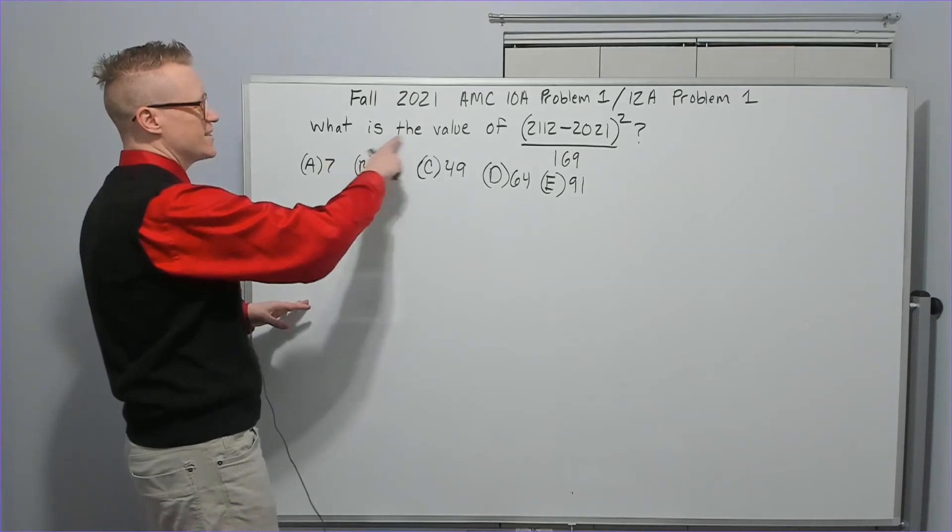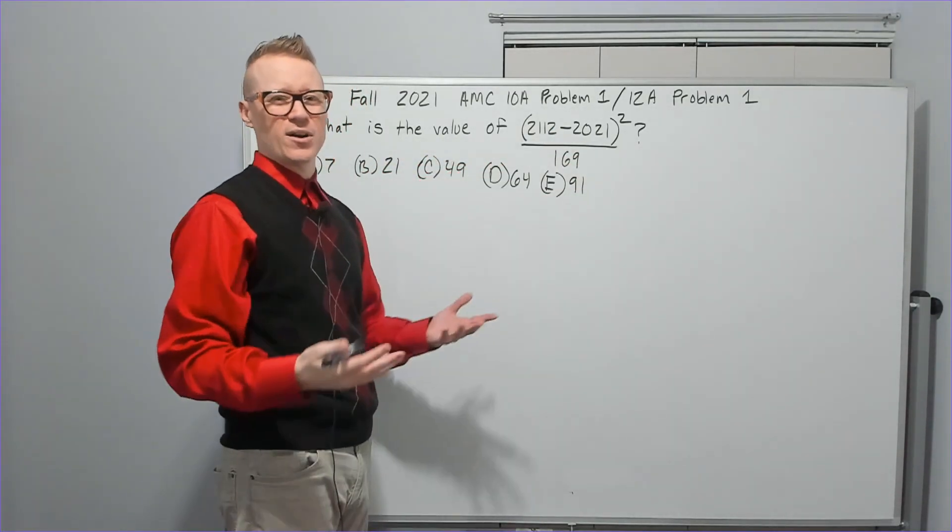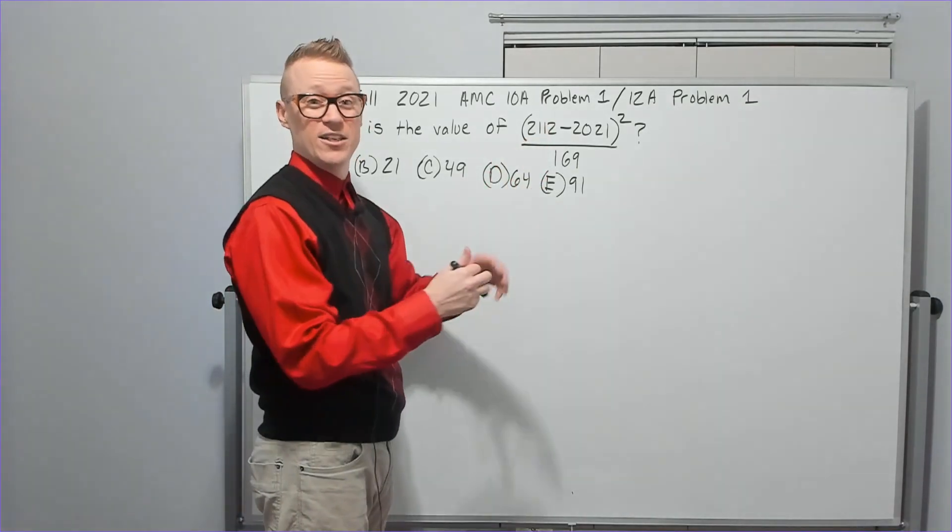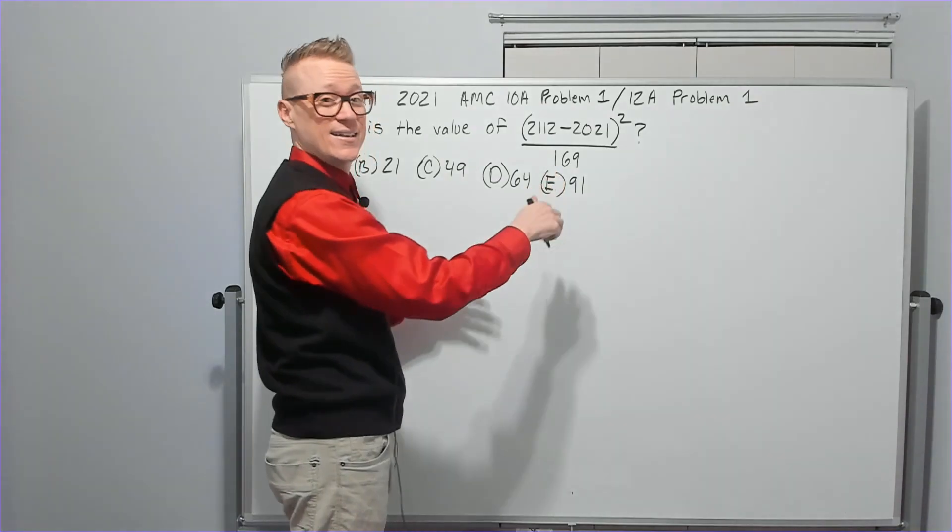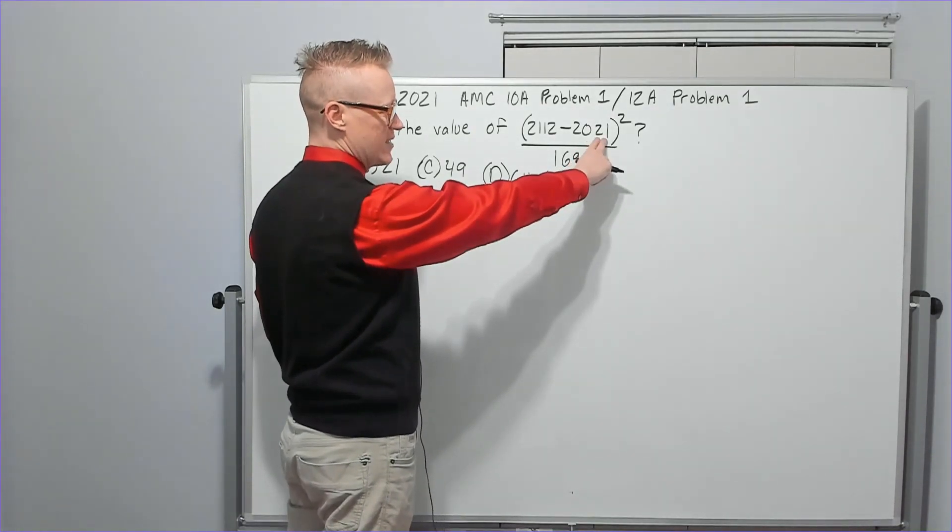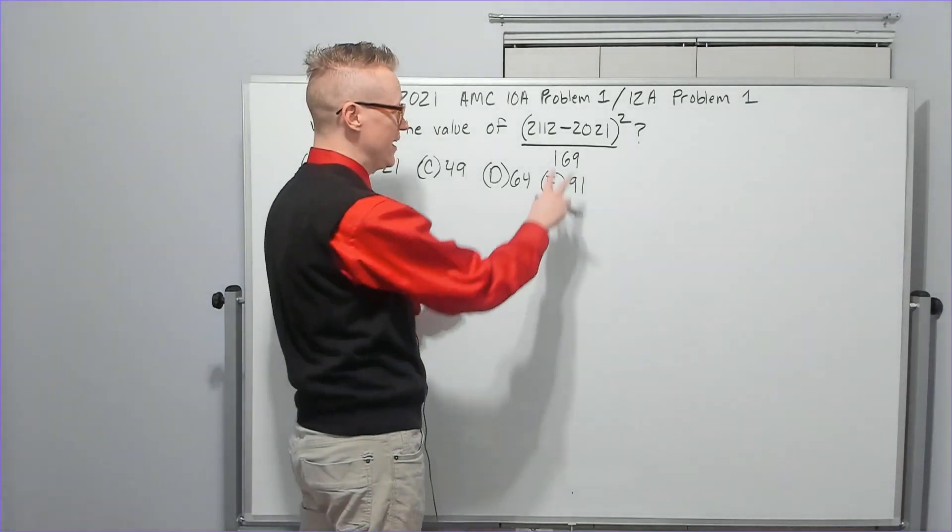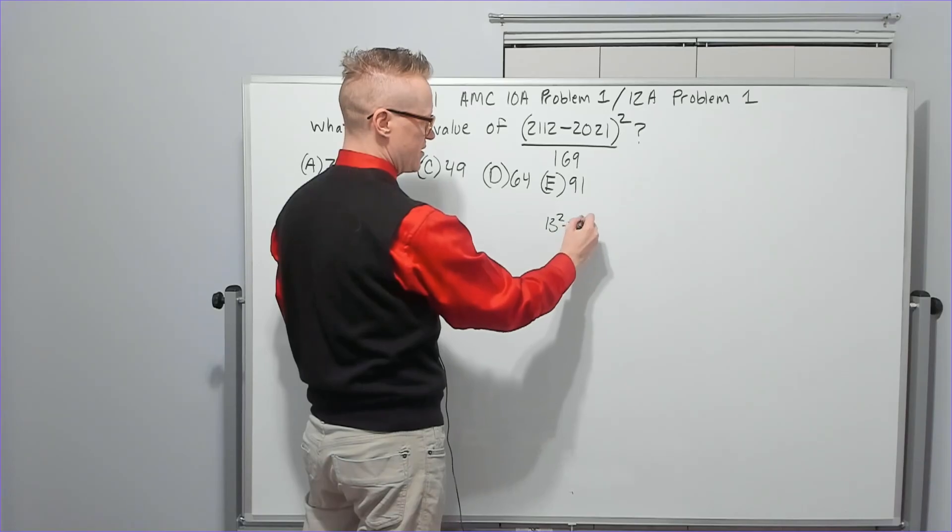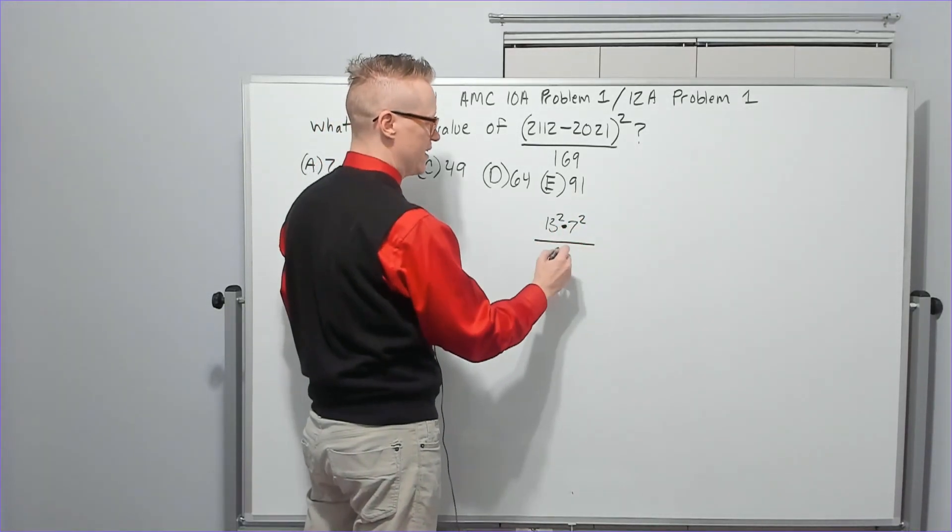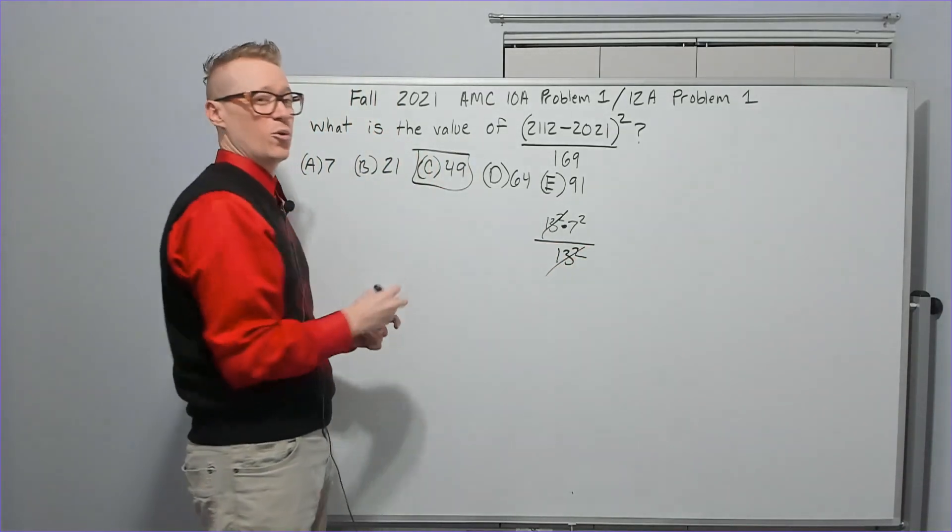Problem number one. What is the value of this? Don't spend a lot of time being too crazy. Just look at it and figure it out. I don't like to subtract, I like to add. If you add 79 to this you'll get 2100. Add 12 more to get 91. It's 91 squared, which is 13 squared times 7 squared, because 91 is 13 times 7. Dividing by 13 squared to cancel will get you 49.